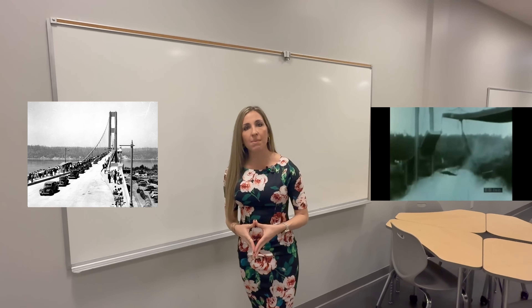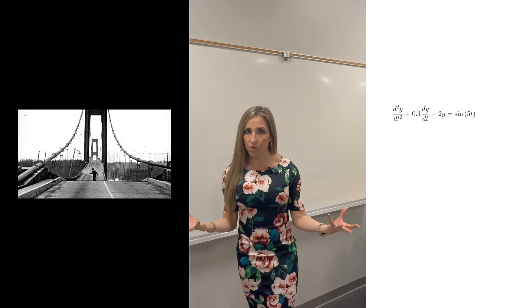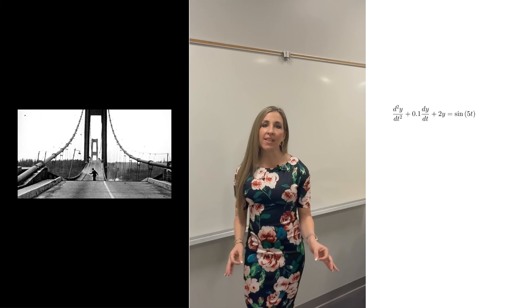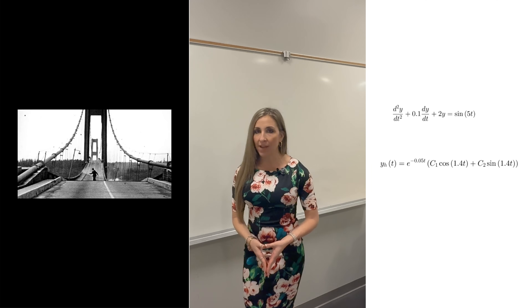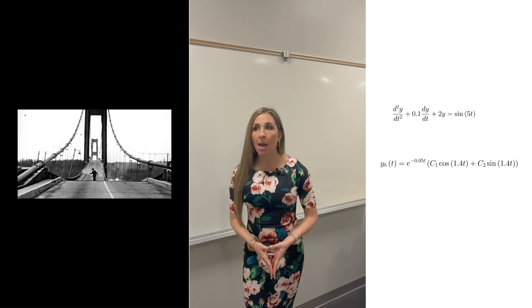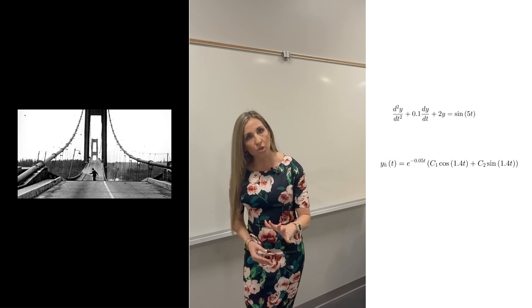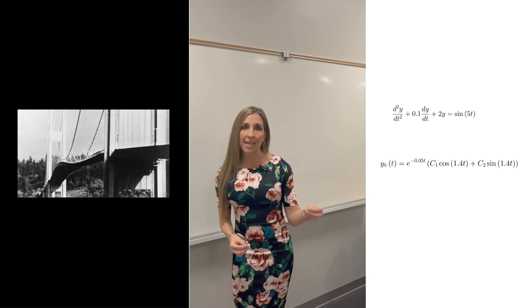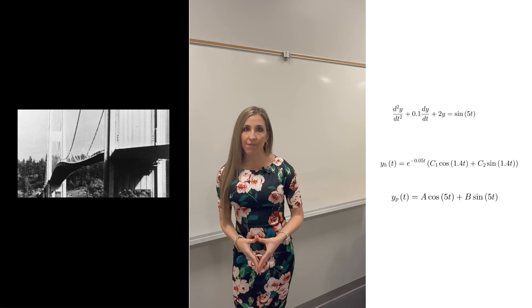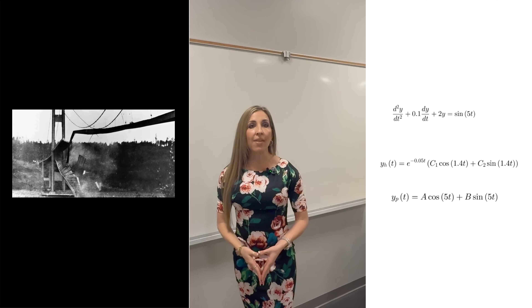A bridge's oscillation can be modeled by a second order differential equation. The solution has two parts: the homogeneous solution, which describes the bridge's natural motion, and the particular solution, which models the wind's effect. Solving the characteristic equation for the homogeneous part, we get y sub h of t equals e to the negative 0.05t times the quantity c1 cosine of 1.4t plus c2 sine of 1.4t. This represents damped oscillations, meaning the bridge's natural motion slowly dies out. For the particular solution, since the forcing term is sine of 5t, we assume a solution of the form a cosine 5t plus b sine of 5t, and substituting back into the original equation and solving for a and b gives the steady state solution.